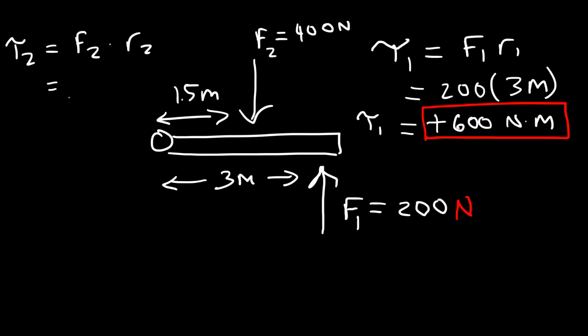The ideal mechanical advantage equals the input lever arm divided by the output lever arm. Here that's 6 ÷ 3 = 2. Now consider a shovel as another simple machine. The axis of rotation is at the hand gripping the handle. The input force is applied 1 meter from the axis, and the output lever arm (at the blade) is 0.1 meters. Setting T1 = T2: 200 × 1 = F2 × 0.1, giving an output force of 2000 N.